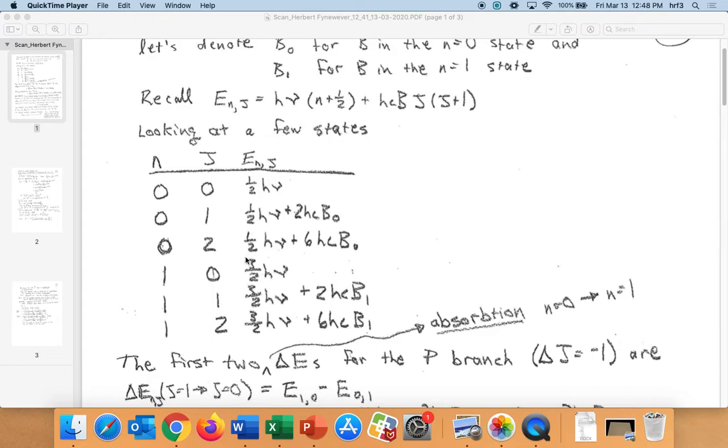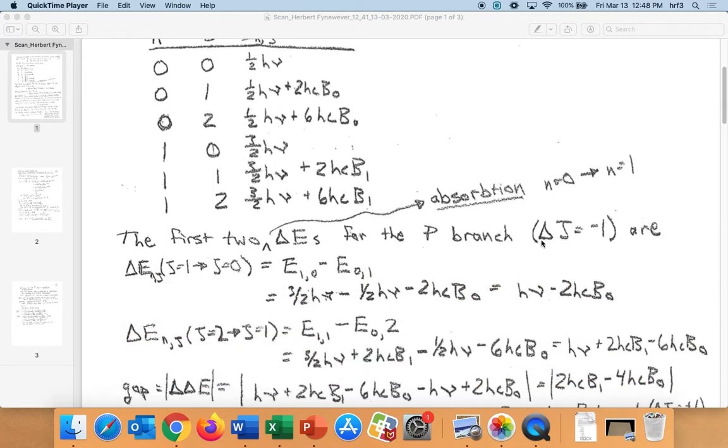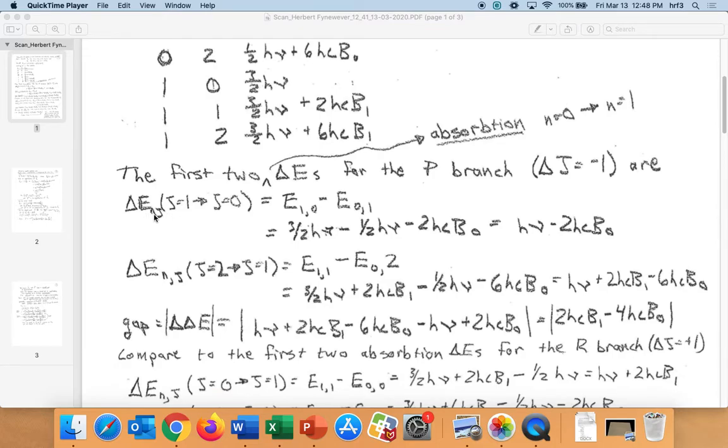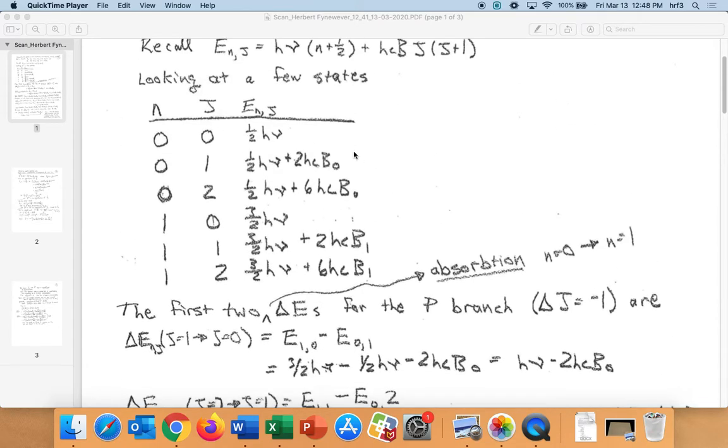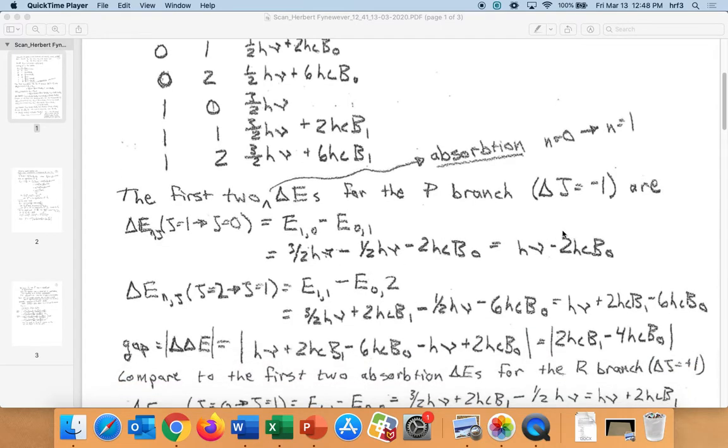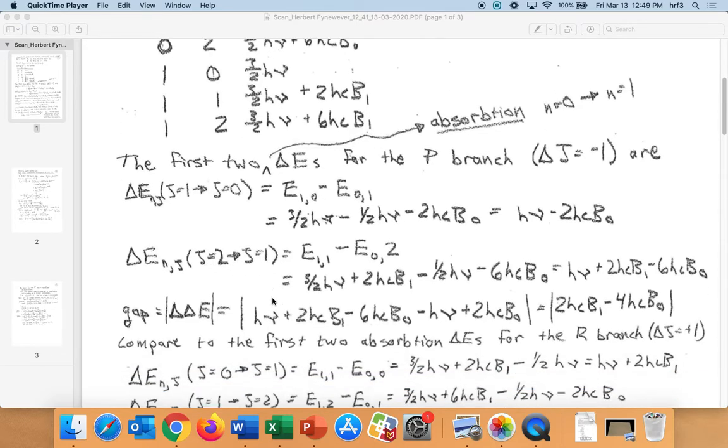Now for a spectrum, of course, we're looking at transitions between states. So let's look at absorption going from n=0 to n=1. The first two lines on the absorption spectrum for the P branch, so we're getting excited vibrationally but relaxing rotationally, we could have ΔE_nj for j going from 1 down to 0, so E_10 minus E_01. Then you plug in these formulas from up here for the two relevant states and you get this ΔE. That's where you would expect your line. You can do the same thing for absorption, the next peak relaxing. So in the P branch, j=2 going down to j=1, and you get this.